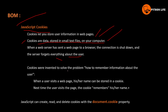Cookies were invented to solve the problem of how to remember information about the user. We can store a user's ID or similar information in a cookie file. When the user visits the same web page again, their name can be stored in a cookie. Next time the user visits the page, the cookie remembers their name.